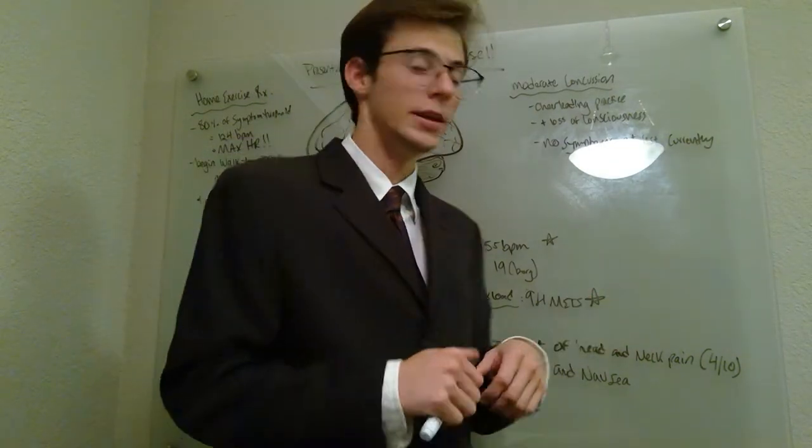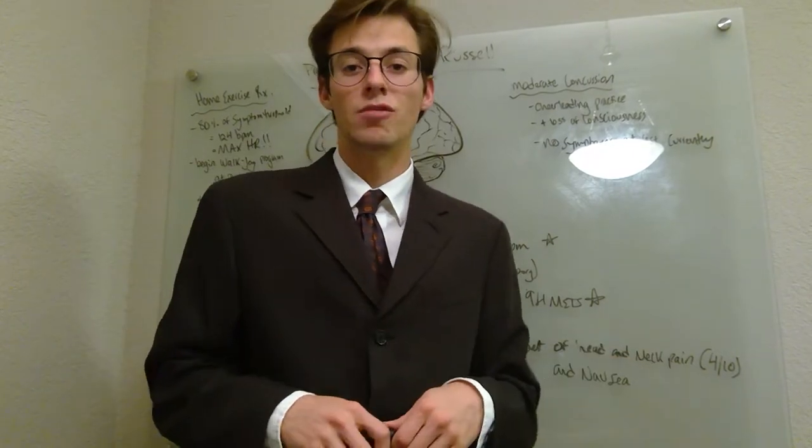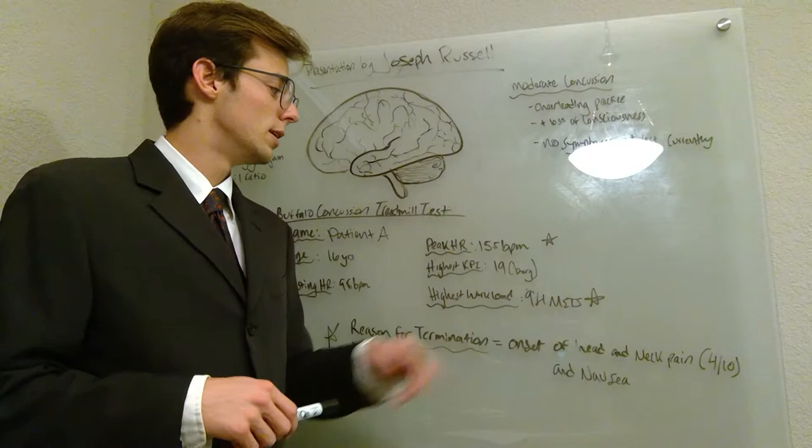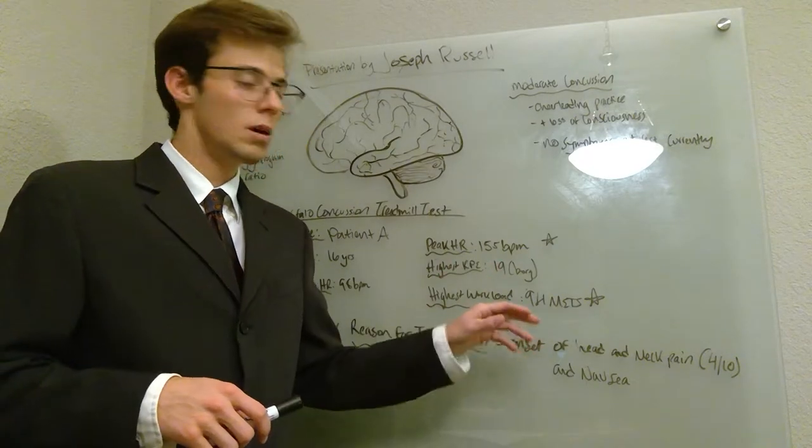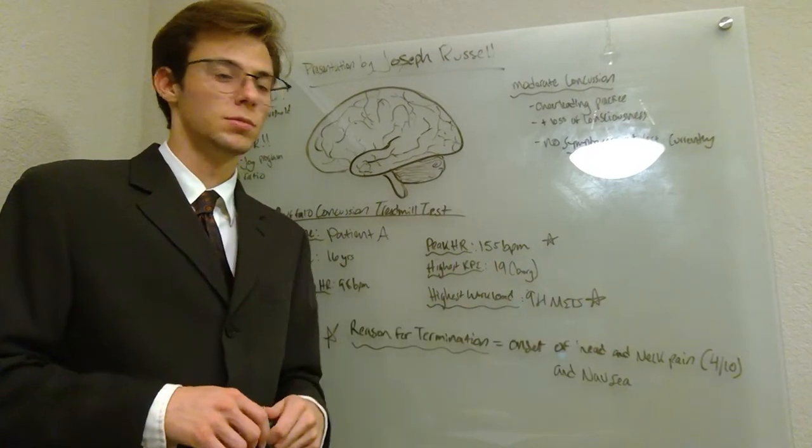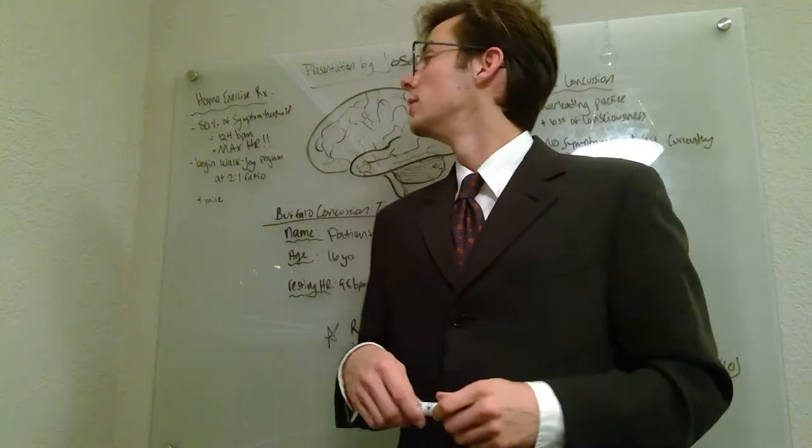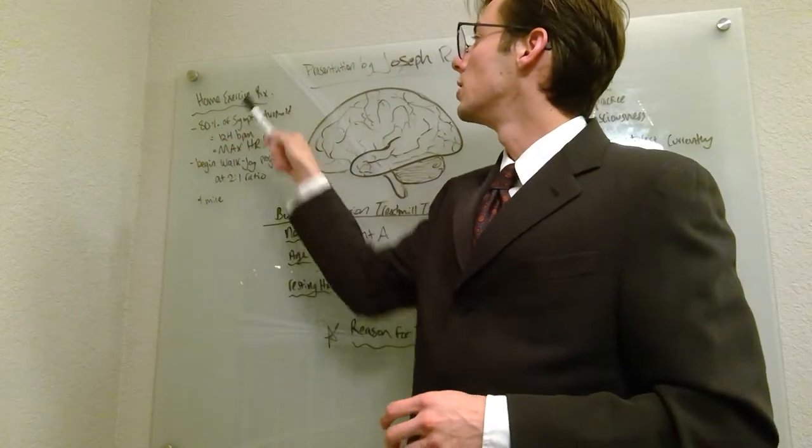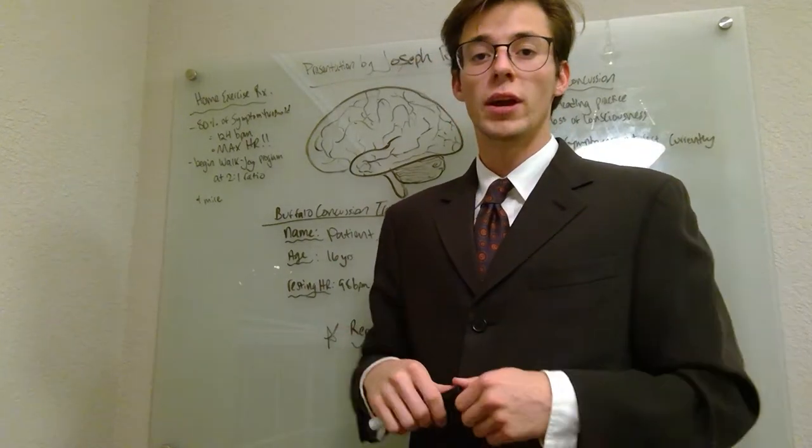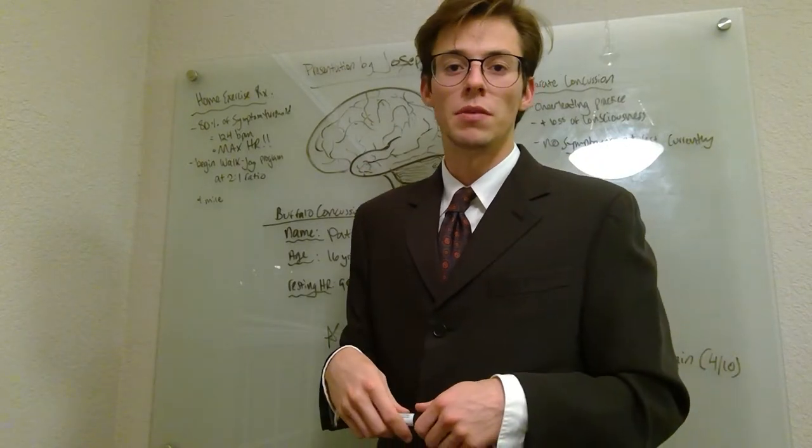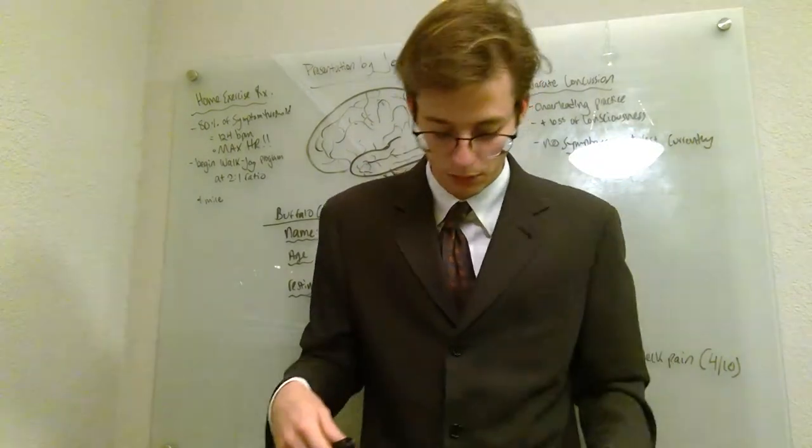9.4 minutes and 155 beats per minute represents our symptom threshold. Our symptom threshold is then used to create a home exercise prescription. The general recommendation is to use 80% of symptom threshold, and 80% of 155 beats per minute is 124 beats per minute. That would be your max heart rate to work at.